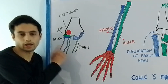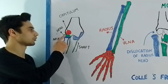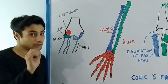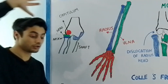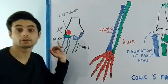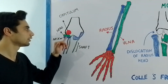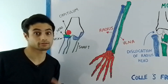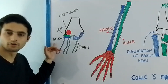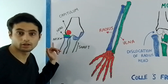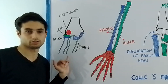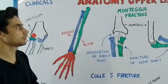The head of the radius bone is fractured when a person falls on the outstretched hand — the head is driven sharply against the capitulum, which is present on the humerus bone. Also, when a person falls on the outstretched hand, the neck of the radius can also be broken.